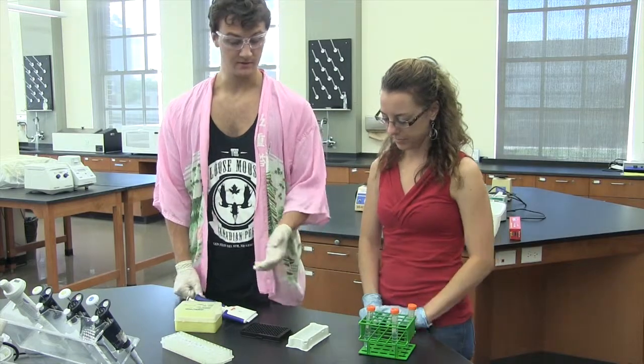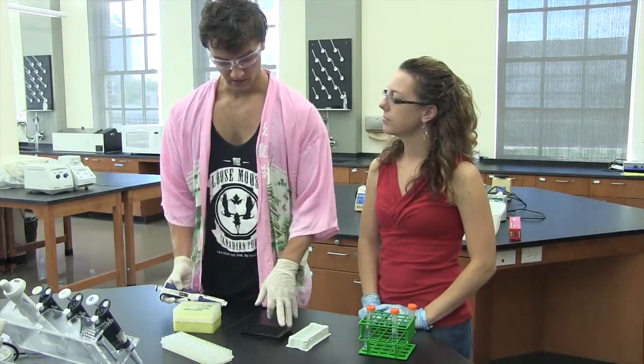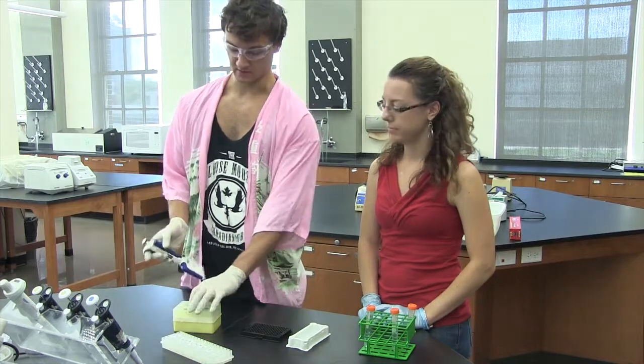A and B are generally just going to be a blank buffer. C through E, how I'm going to be setting it out today, is going to be our wild type protein. And then F through H is going to be our respective mutant.